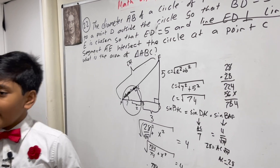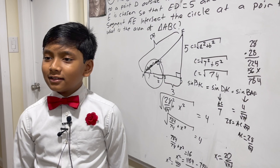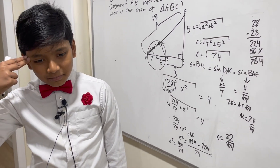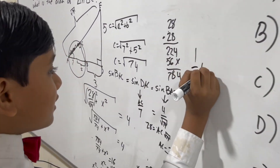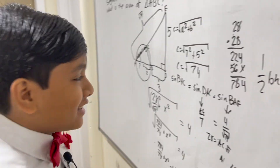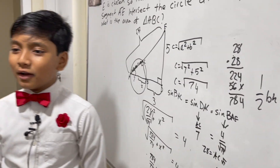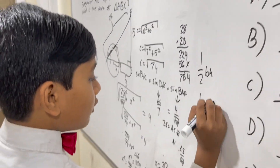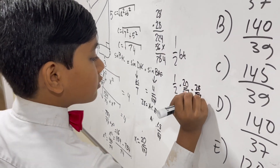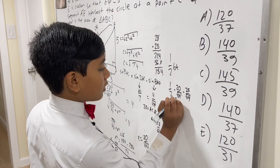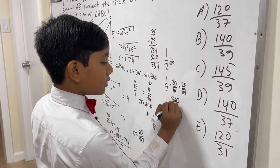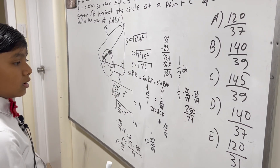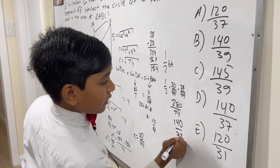So now we're going to find that area. Area is 1/2 times (20 over the square root of 74) times (28 over the square root of 74). We have 20 times 28 equals 560, over 2 is 280, over 74. So that's 140 over 37. Which makes the answer D.